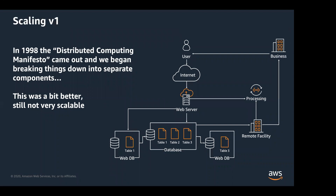Fast forward - around 1998, we decided to do a distributed computing manifesto, and that's when we started breaking things down. In comparison to the last slide, there's not a whole lot of differences - we basically broke up the database tier. Part of the reason was so we could scale out the web servers. As traffic increases, we needed to add more web servers and then data became the bottleneck, so we added more databases and decoupled some of the data. This is better than the previous architecture, but still not very scalable - we just have three databases and a very basic web tier.